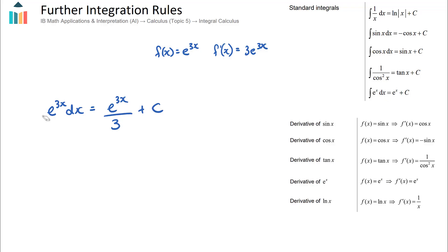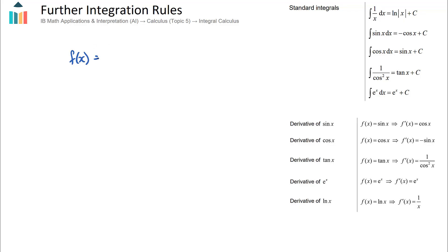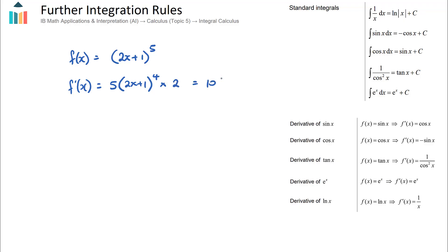One more rule not in the formula booklet is what I call the anti-chain rule — the opposite of the chain rule. To revise: if f(x) = (2x + 1)⁵, using the chain rule, the 5 comes out front, the power reduces by 1, and we multiply by the derivative of the bracket, giving 5·(2x + 1)⁴ · 2 = 10·(2x + 1)⁴.